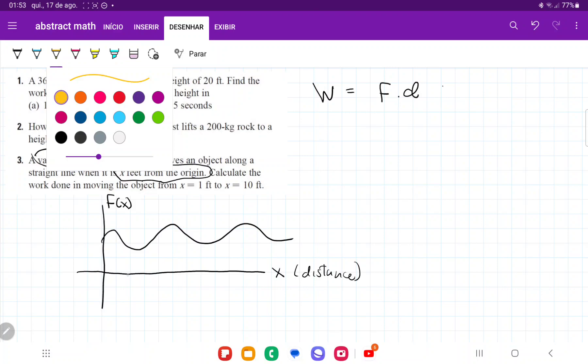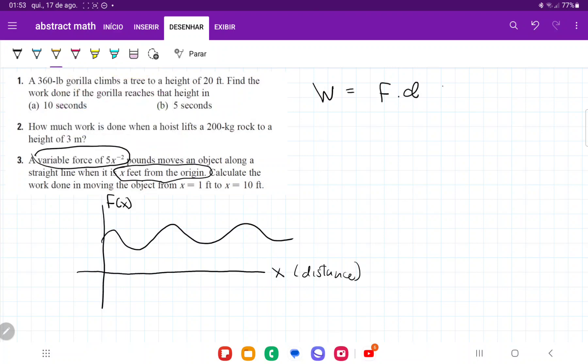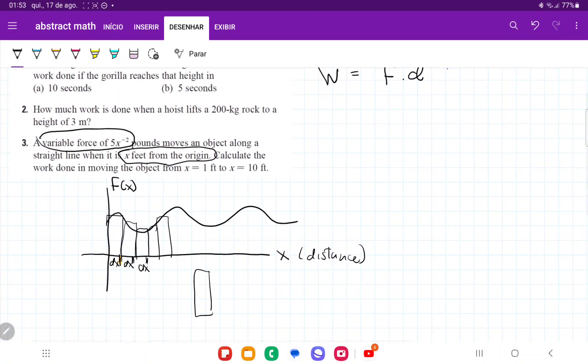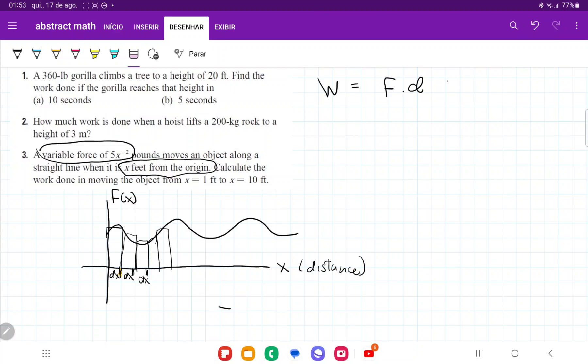So what we have to do here is we have to break down this x-axis into little dx's, so tiny bits of the x-axis, and then form rectangles. And these rectangles, when we add them up, each rectangle is going to have a base of distance, so x, and a height of force. So the area of this rectangle is going to be force times distance, which is work.